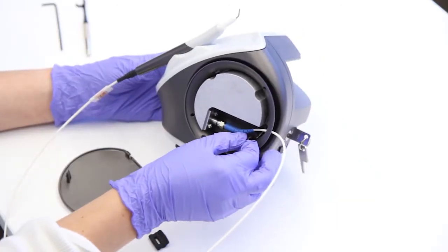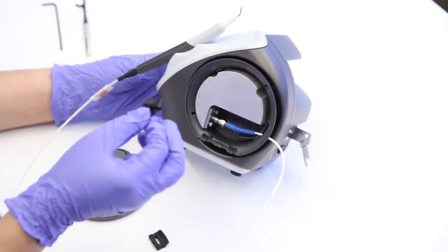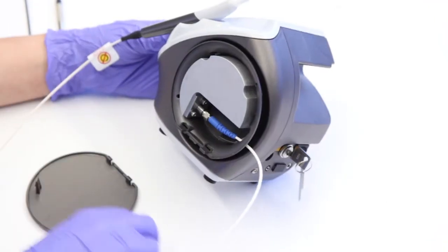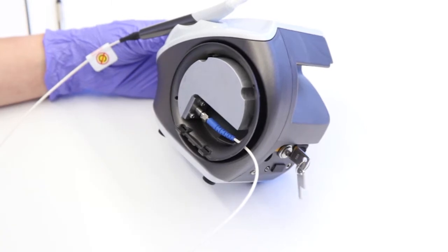First, gently grasp the fiber block and remove it from the unit before disconnecting the fiber. Place the wind cover, wind retainer, and fiber block to the side.